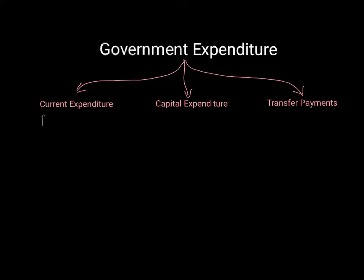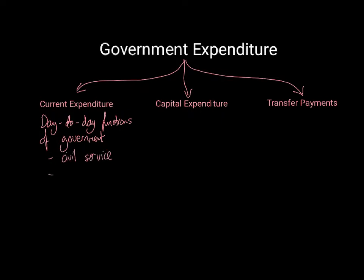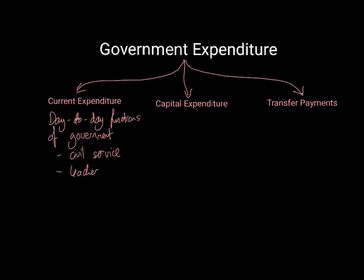Current expenditure is the day-to-day functions of government. These are ongoing expenditures — so these are, for instance, the civil service, teacher salaries, at least in the UK where we have a state education system, and other things like that. So day-to-day expenditures are called current expenditure.